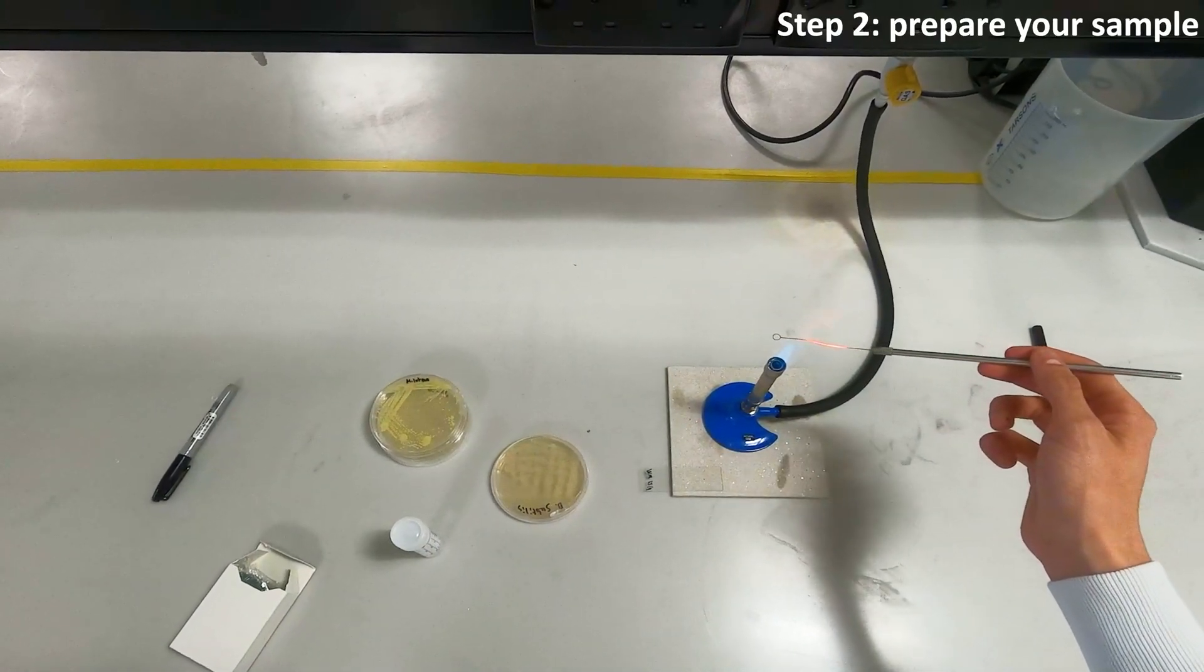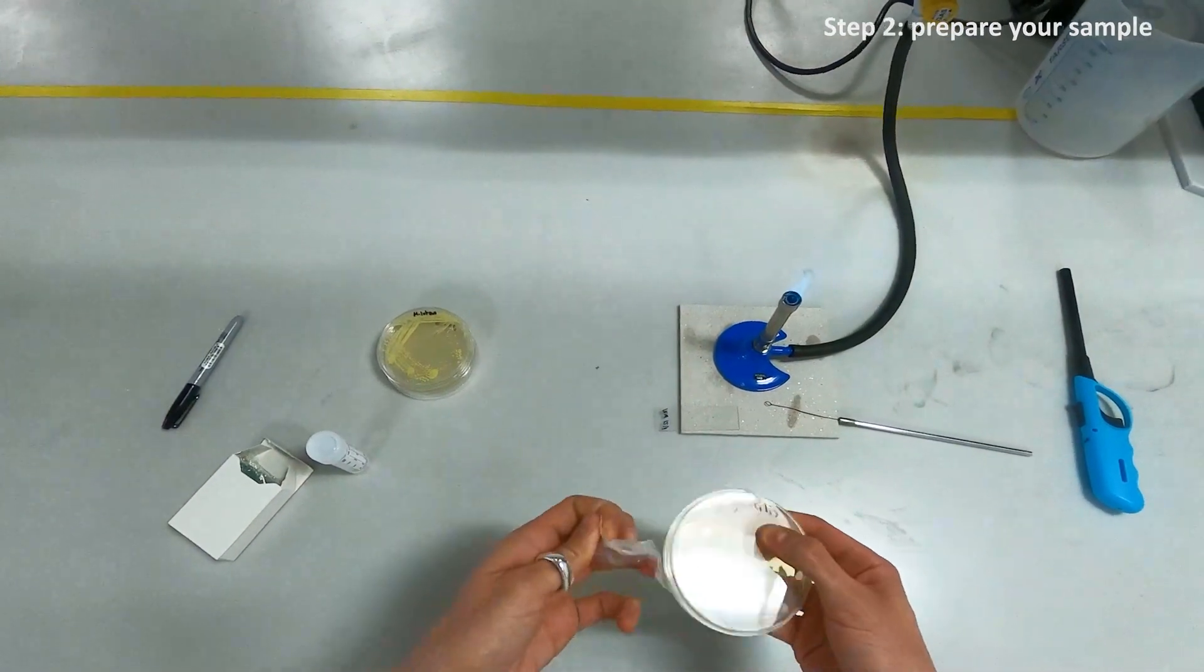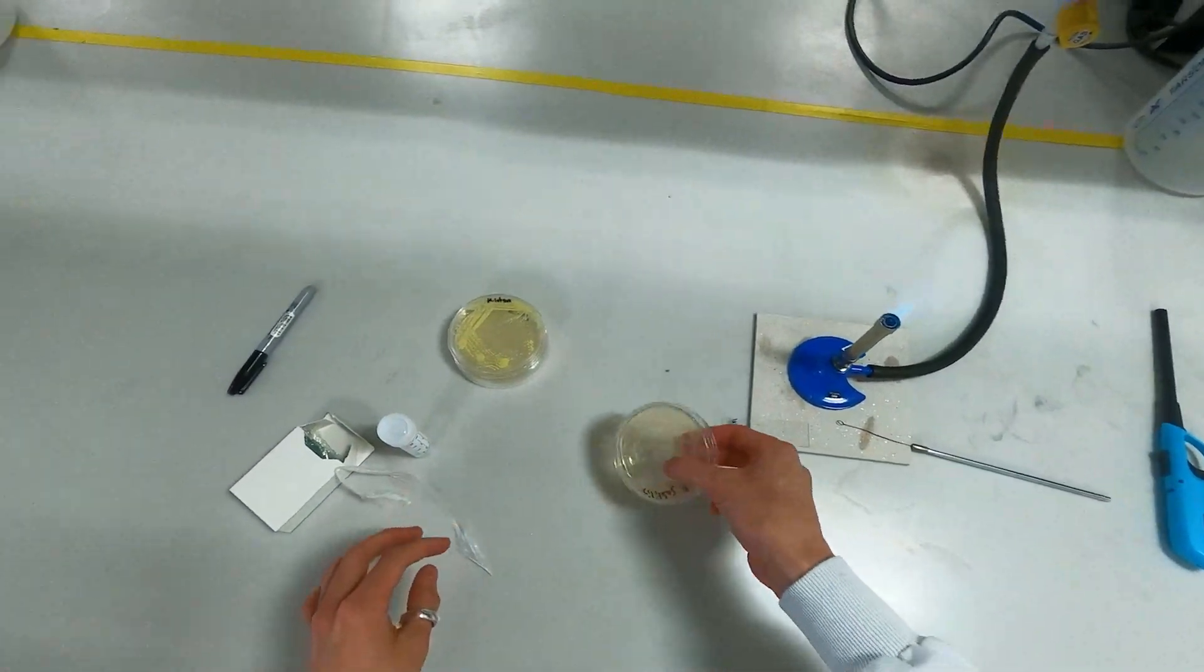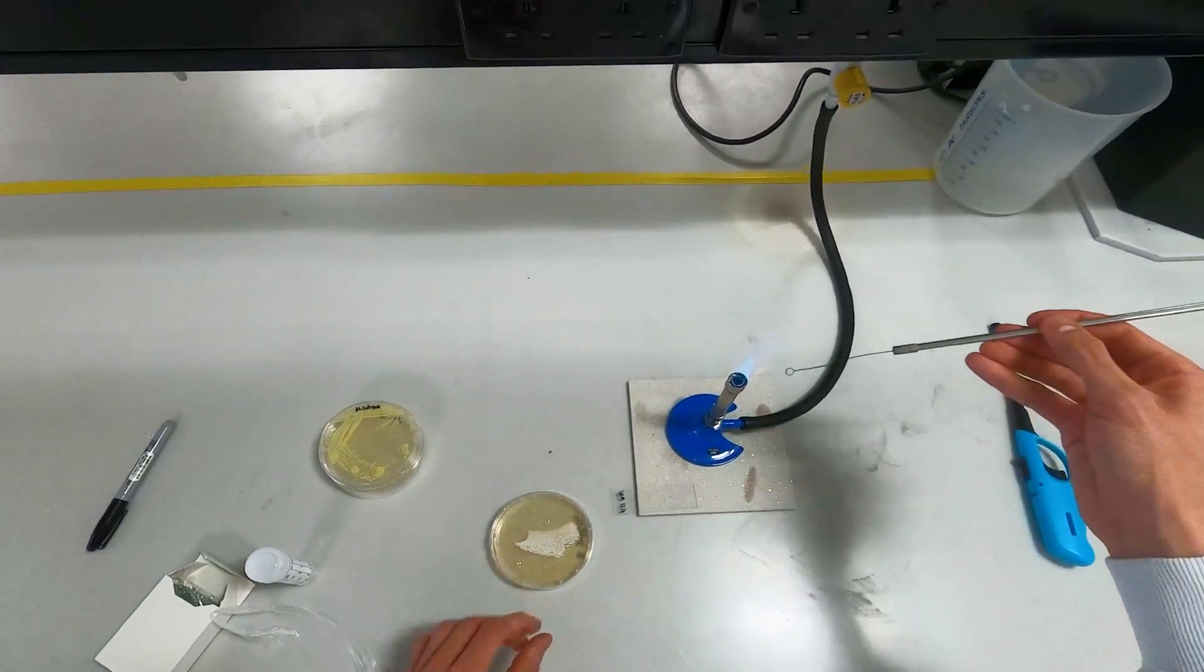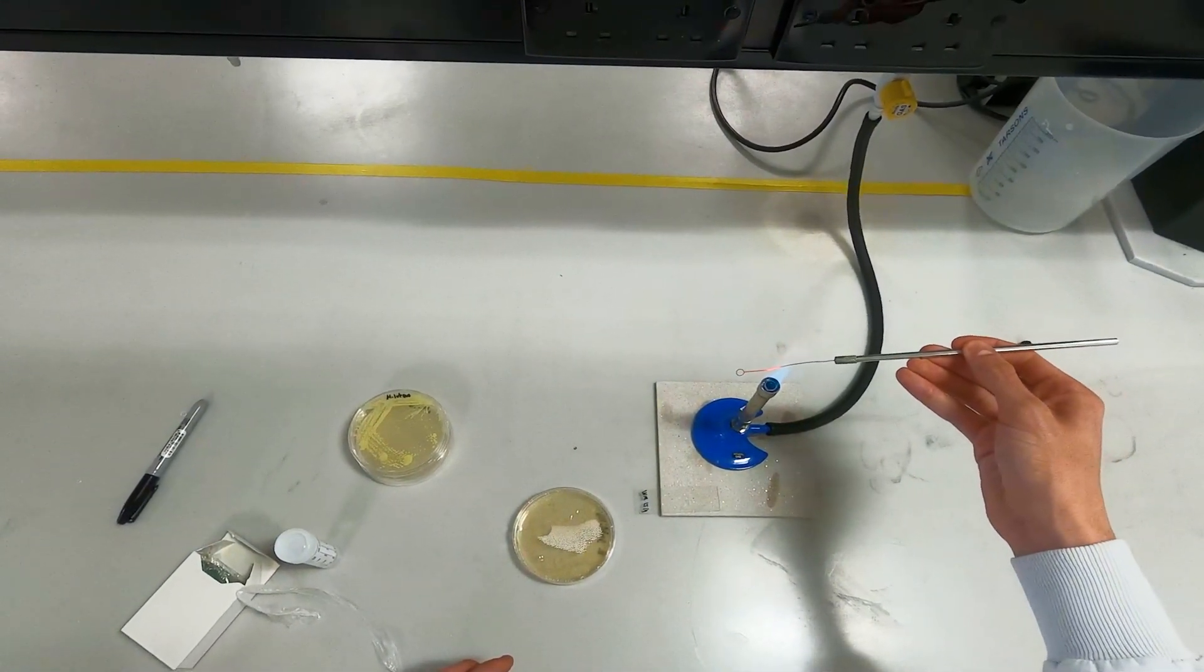Now take any tape you might have off your plate so you're ready to take a sample from it. Place it appropriately and flame your inoculation loop before you pick up any sample. Also make sure it's cool enough - you don't want to damage your bacteria.